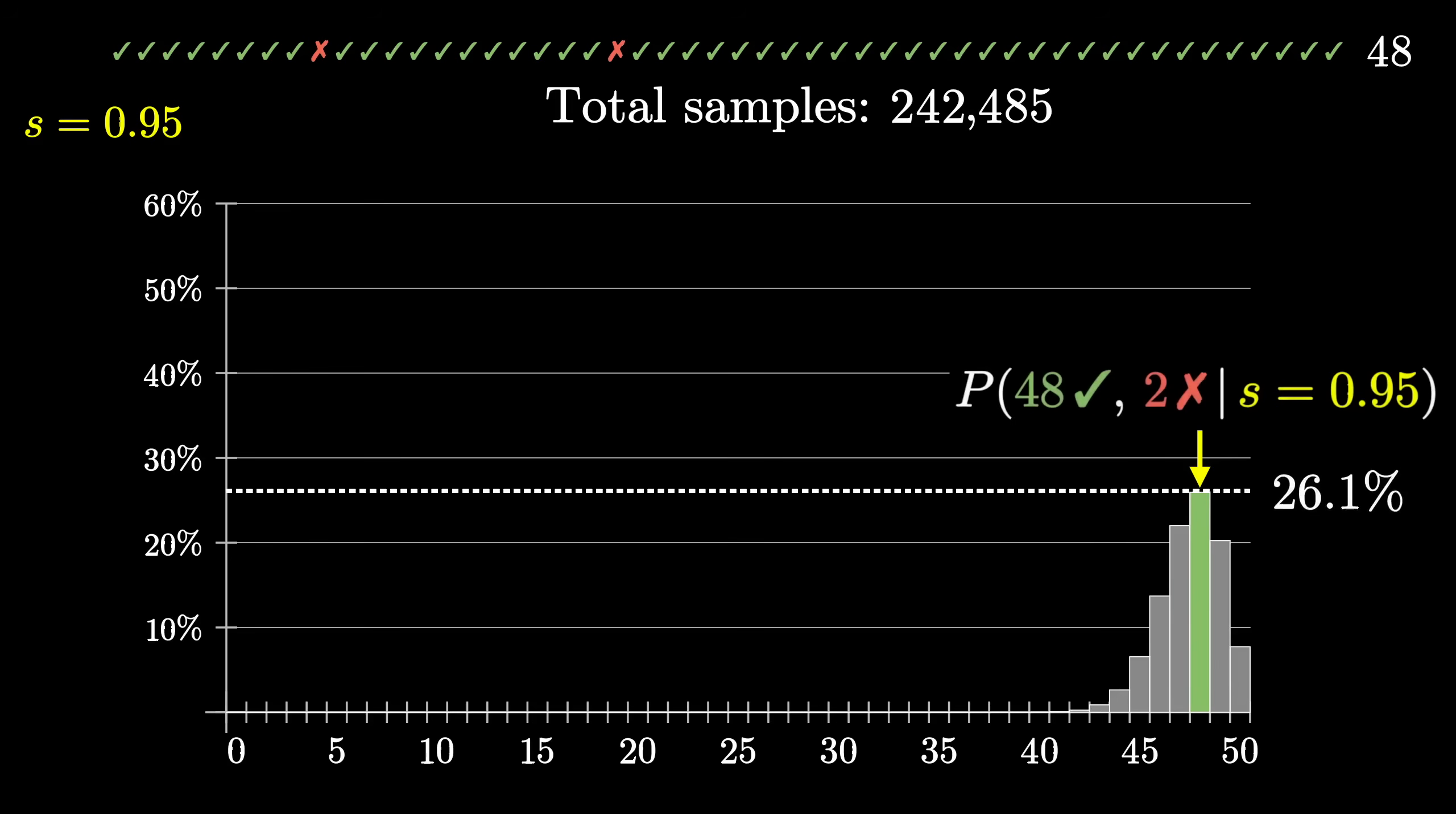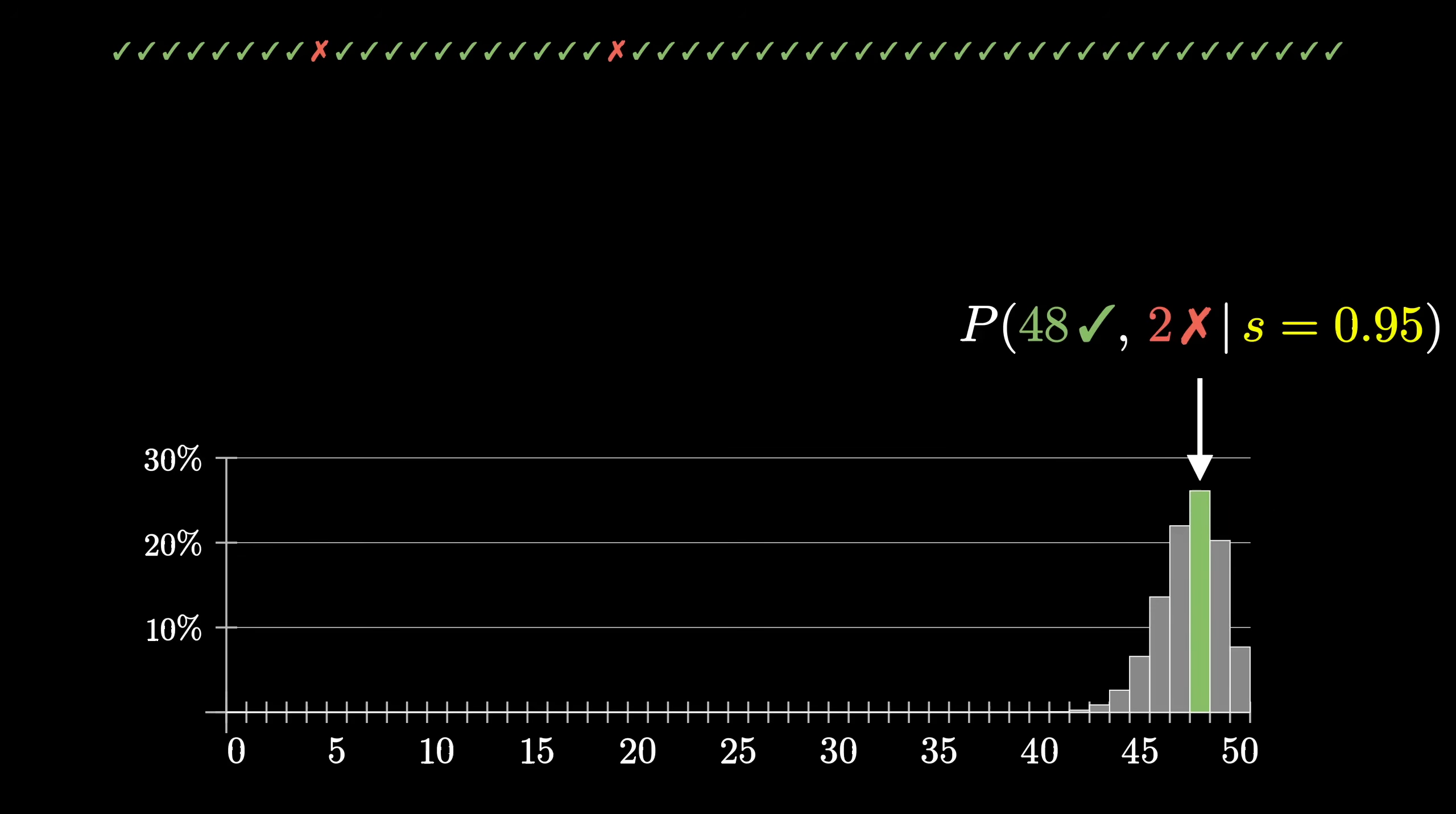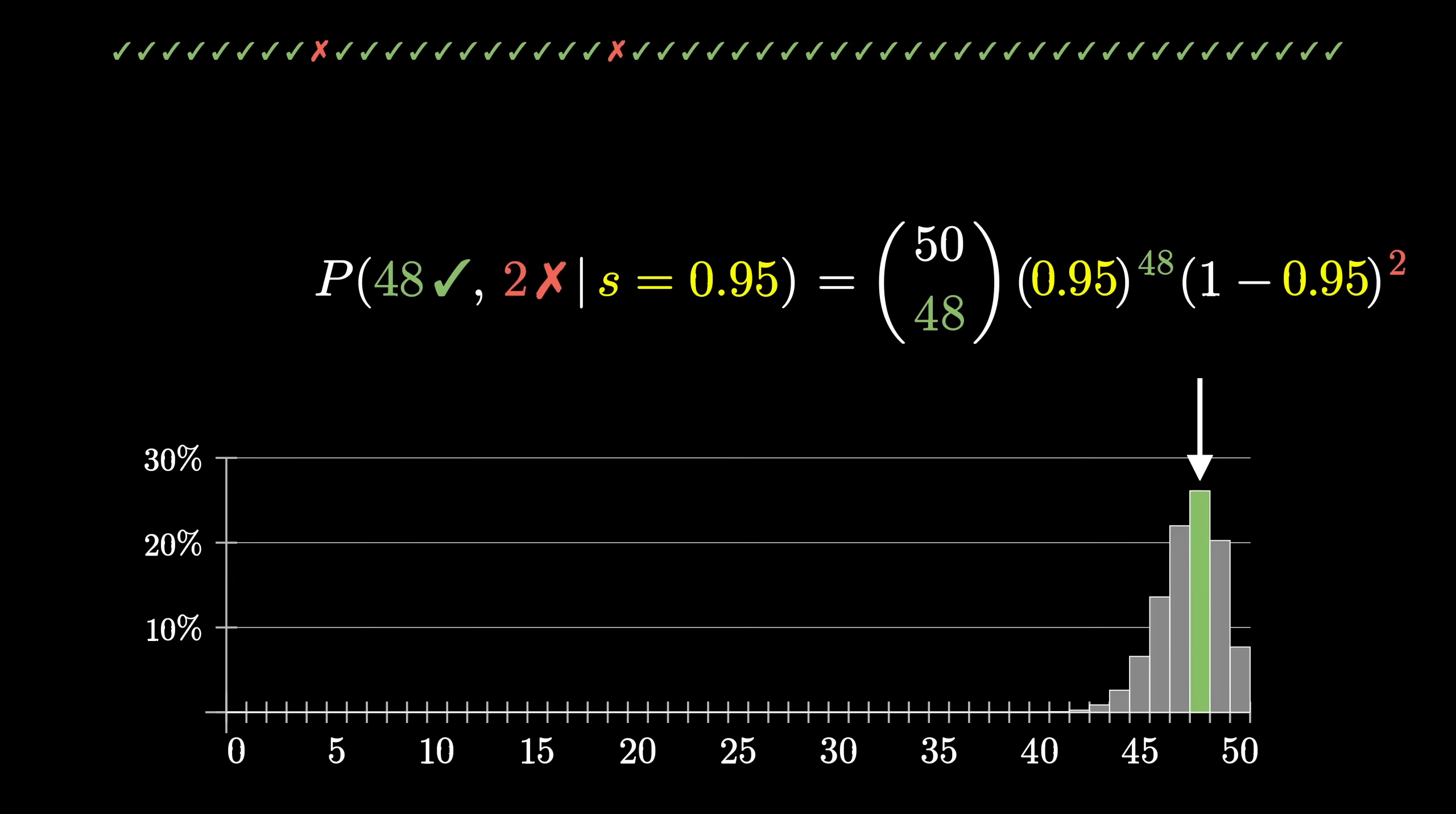Luckily, in this case, an exact formula is not bad at all. The probability of seeing exactly 48 out of 50 looks like this. This first term is pronounced 50 choose 48. And it represents the total number of ways you could take 50 slots and fill out 48 of them.